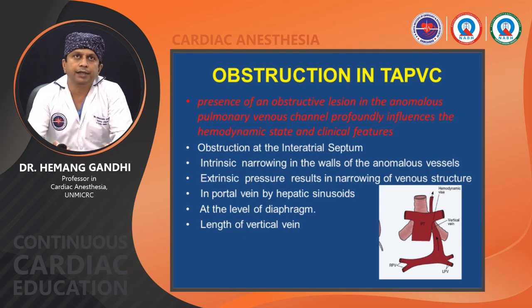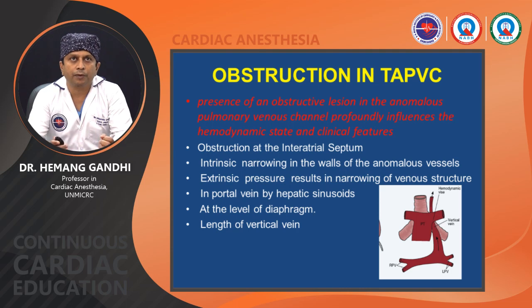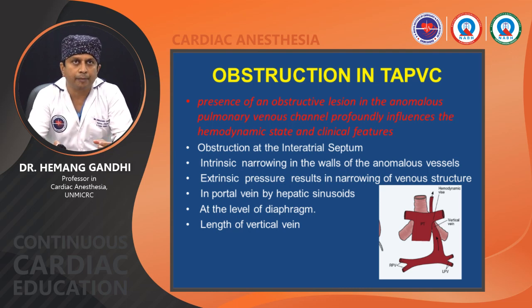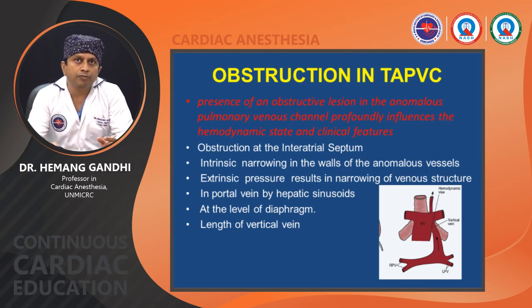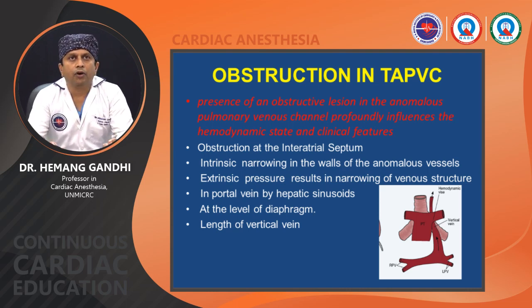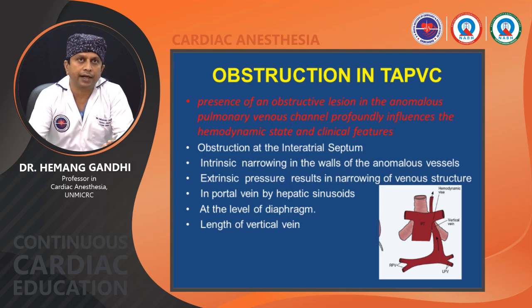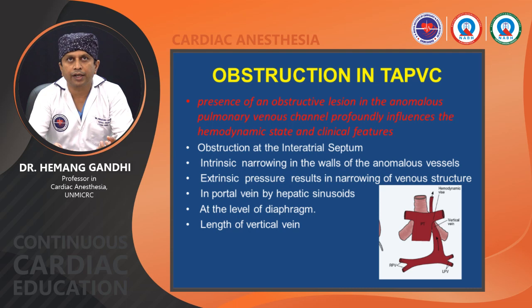Obstruction in TAPVC occurs when an obstructive lesion in the anomalous pulmonary venous channel profoundly influences the hemodynamic state and clinical features. Obstruction usually occurs at the interatrial septum with a small PFO or ASD, or due to intrinsic narrowing in the anomalous vessel wall, or extrinsic pressure causing narrowing. In portal drainage, the hepatic sinusoids provide obstruction. Obstruction can also occur at the level of the diaphragm and along the length of the vertical vein. All infracardiac TAPVCs are typically obstructed.